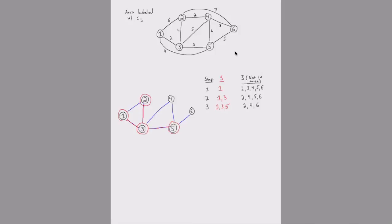Going into step 4, we have nodes 1, 2, 3, and 5 in the tree, and nodes 4 and 6 not in the tree. We rearrange the relevant arcs: we add arc 2-4 because it goes from tree node 2 to non-tree node 4, and we include arc 2-6. Arc 1-2 no longer crosses the cut since it connects two tree nodes. We now figure out which node to bring in next.